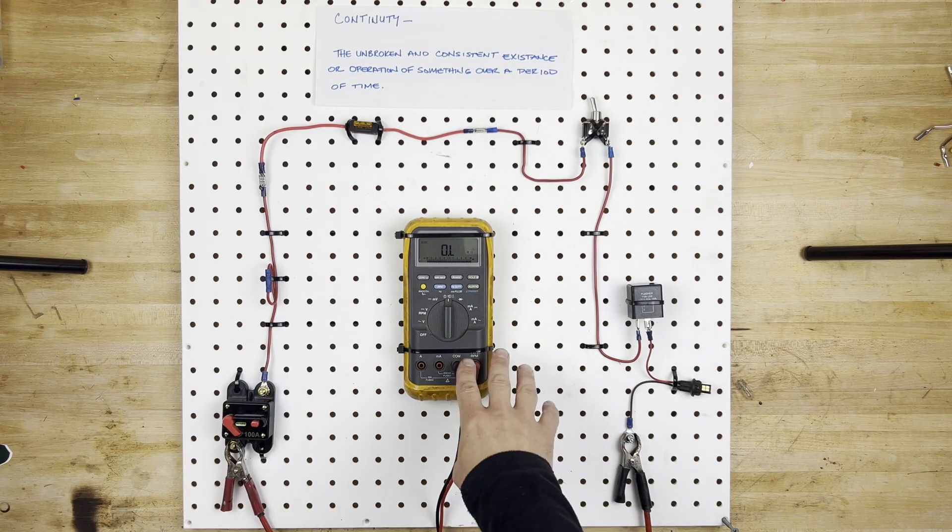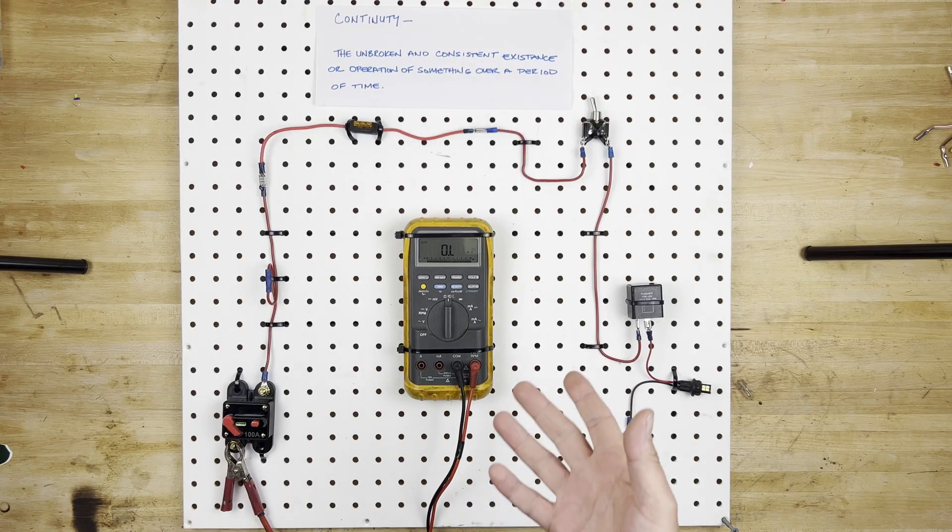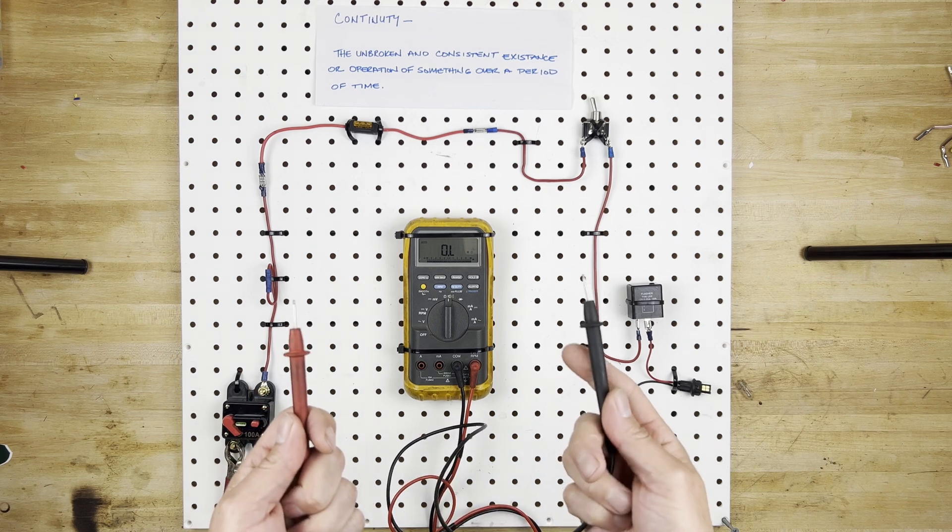Now, the first thing you want to do is get out your multimeter and set it to ohms. That's the one that looks like a horseshoe on the meter, and all that's doing is measuring resistance between the red and the black terminals of your multimeter.